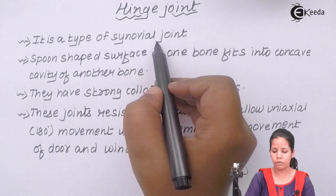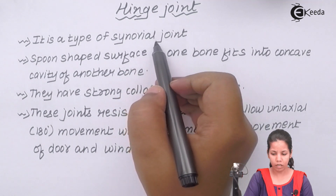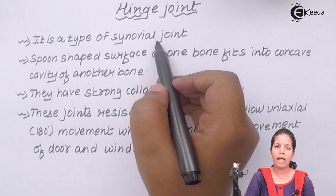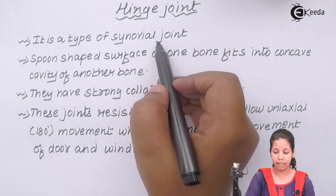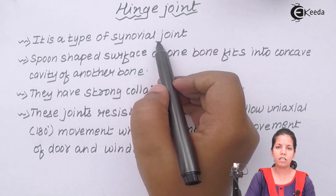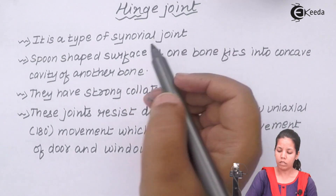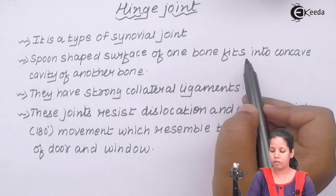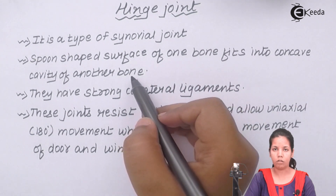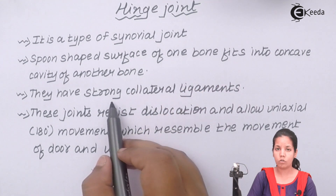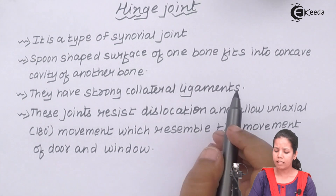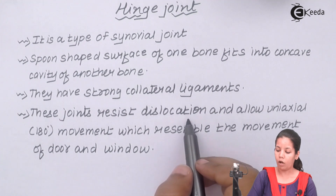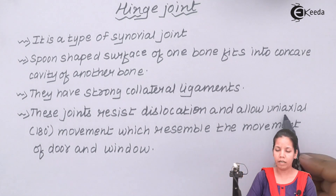It is a type of synovial joint. The presence of synovial membrane and synovial fluid would be there. The synovial membrane is very articulating in these joints and secretes a clear viscous phagocytic synovial fluid. Hinge joints have a spoon-shaped surface of one bone that fits into the concave cavity of another bone. They have very strong collateral ligaments, resist dislocation or disorientation, and allow uniaxial movement — that is, movement of 180 degrees.